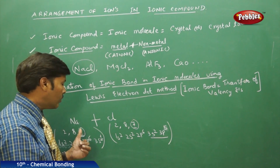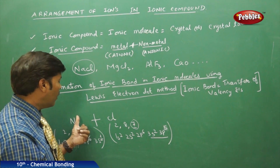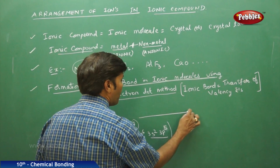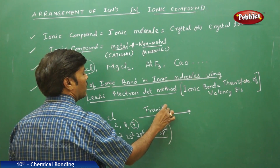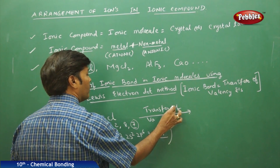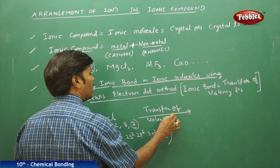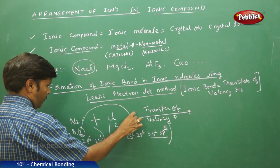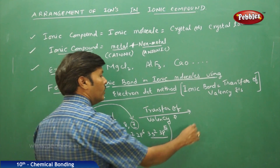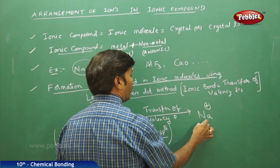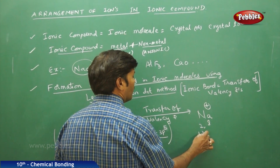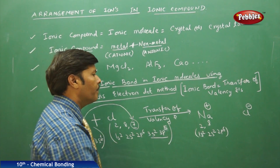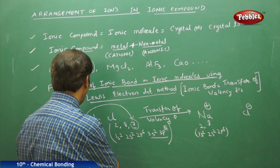The lost valence electron from the metal is transferred to the non-metal, which contains more valence electrons. So here, the electron is being transferred from sodium to chlorine. Therefore, sodium acquires one unit of positive charge with the configuration 2, 8 — that is, 1s² 2s² 2p⁶.